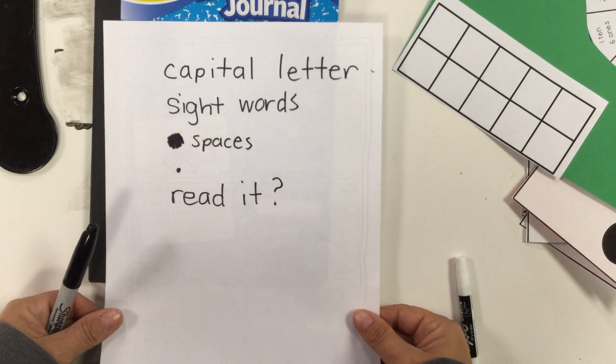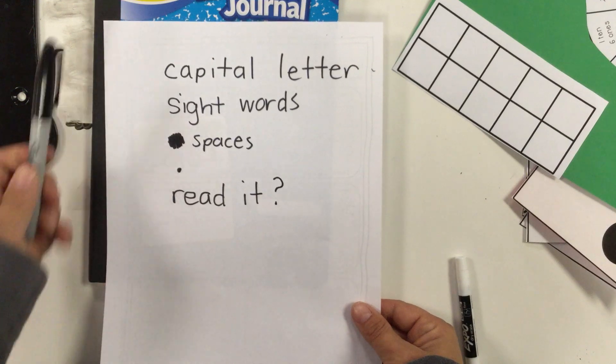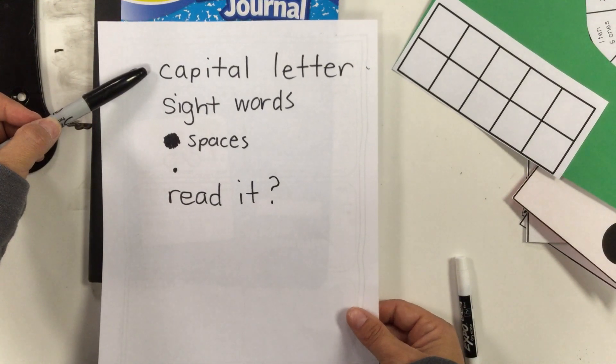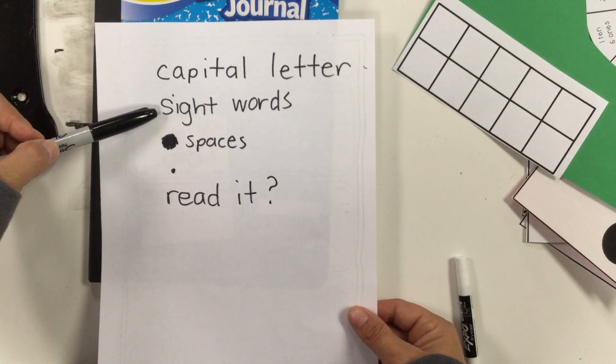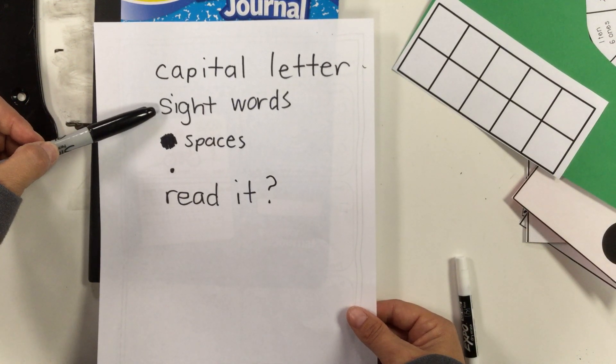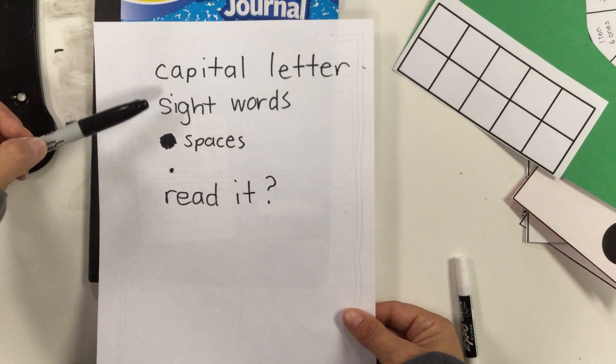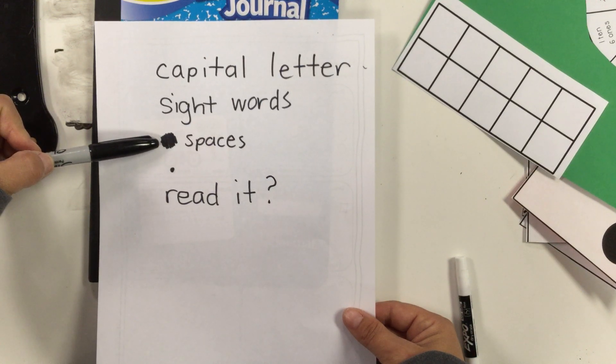I'll review them again at the end, but make sure that you're writing. Each sentence starts with a capital letter, that you spell your sight words correctly. You can get a grownup to help you. If you don't have the list of them, I've included a list in your baggie so it should be in there.